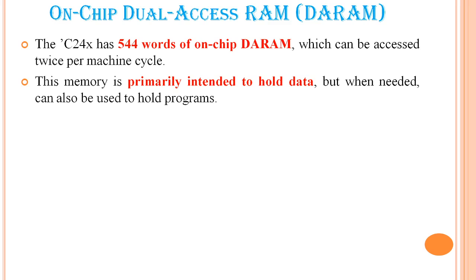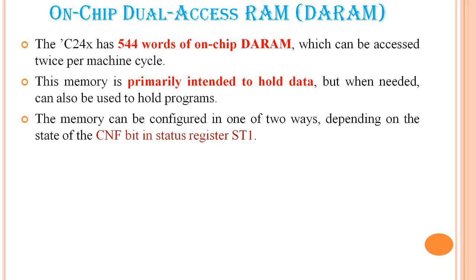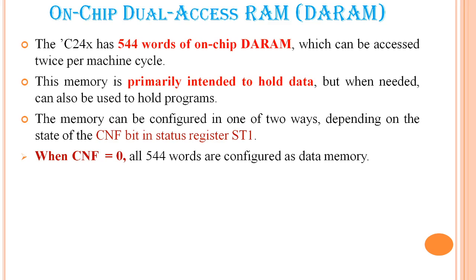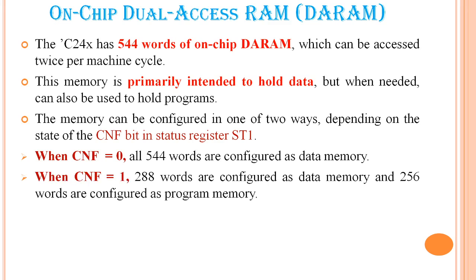We can configure data in two ways depending on the state of the CNF bit in the status register. When CNF equals 0, all 544 words are configured as data memory. When CNF equals 1, 288 words are configured as data memory and the remaining 256 words are configured as program memory.